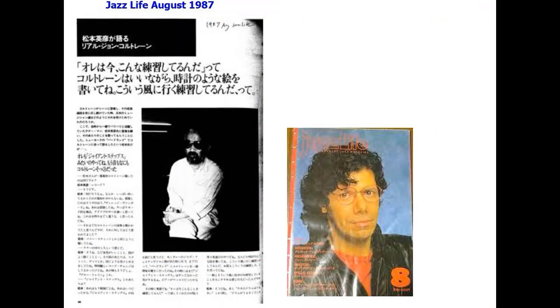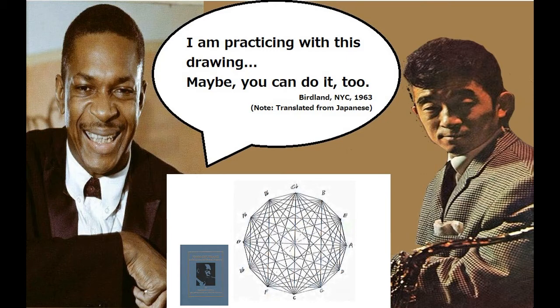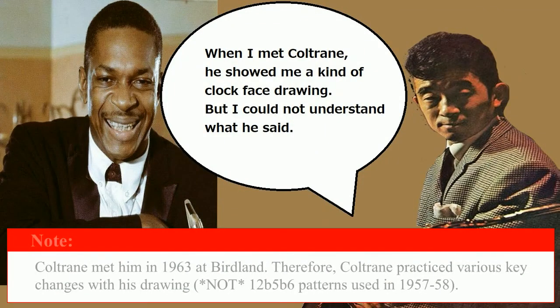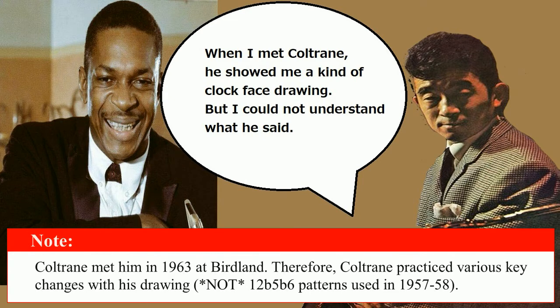There is much justice in this view. This is a Japanese jazz magazine called Jazz Life. I found this article in the August 1987 issue. It's an interview article of Japanese tenor saxophone player Hidehiko Matsumoto, who was making friends with Dr. Yusef Lateef. Matsumoto met Coltrane in 1963 at Birdland. When Matsumoto met Coltrane, Coltrane said, 'I'm practicing with this drawing — maybe you can practice too.' And Matsumoto said he showed me a kind of clock-face drawing, but he could not understand what Coltrane said. You should note Coltrane met him in 1963 at Birdland. Therefore, Coltrane practiced various key changes with his drawing — it's not about the 1, 2, flat-5, flat-6 patterns used in 1957 to 1958.